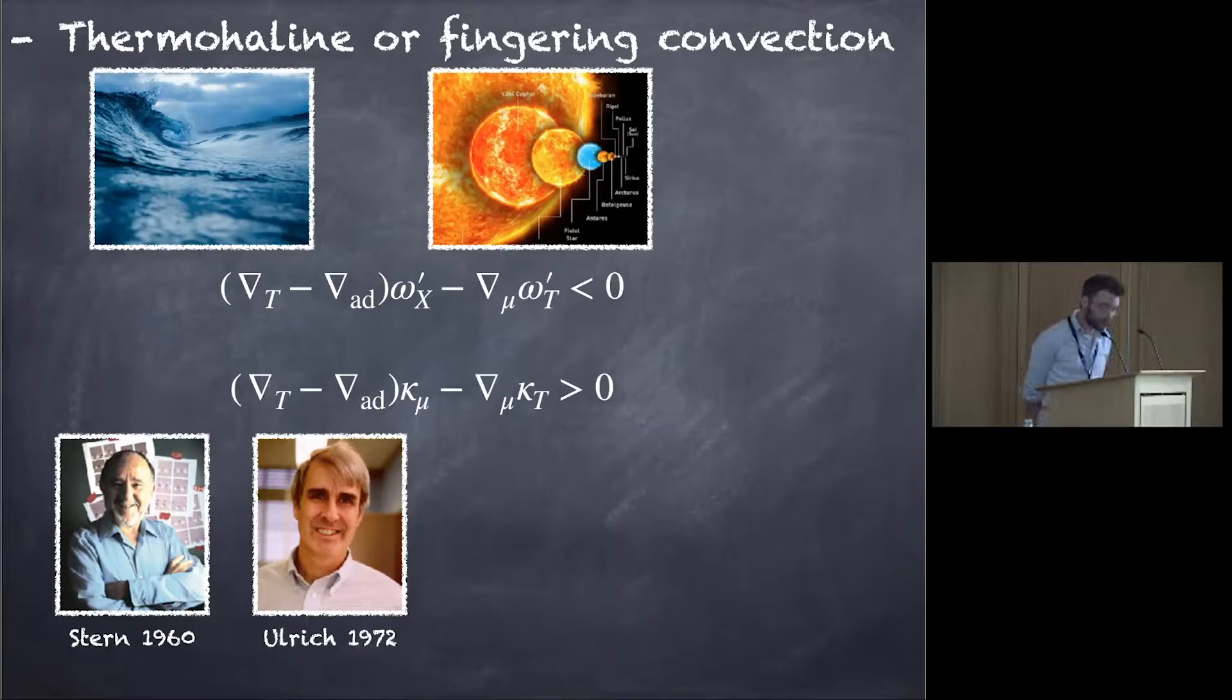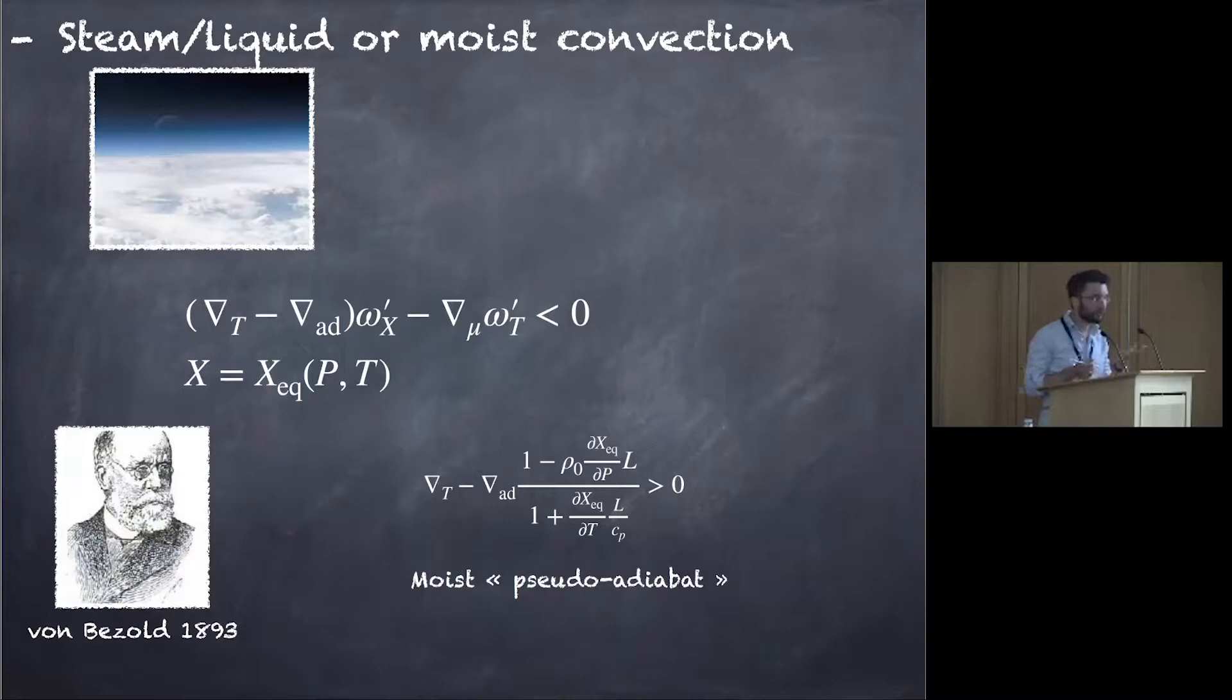But what was much more interesting was to realize that moist convection can also be put in the same form. And it was not obvious at all, and I think has not been seen in the earth climate community that thermo-haline convection and moist convection can be the two faces of the same coin.